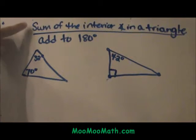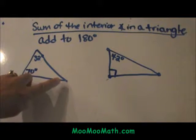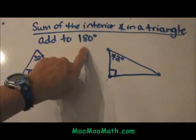Hi, welcome to Moo Moo Math. Today we're going to look at the sum of the interior angles in a triangle. All three angles in a triangle are going to add up to 180 degrees.